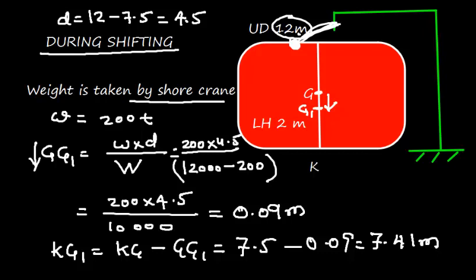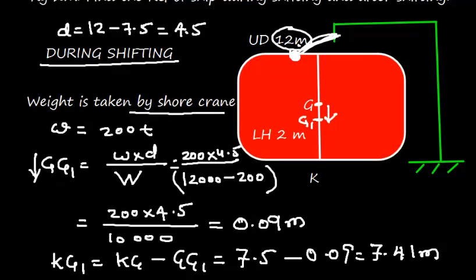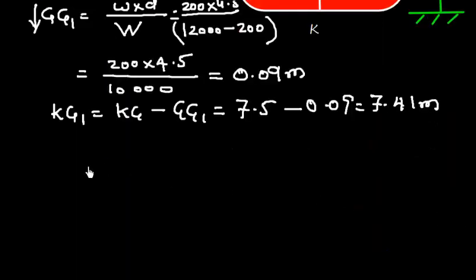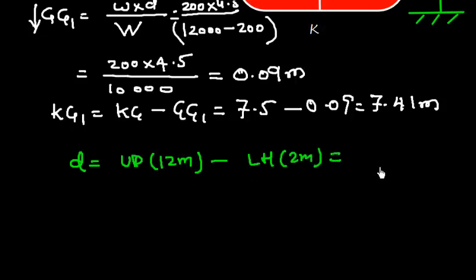Now let's see what happens when the shifting is over. When the shifting is over, the weight is shifted from this location to this location. So the total distance shifted will be D is equal to upper deck distance that is 12 meter and lower hold distance that is 2 meter. So total distance shifted is 10 meter and that is downward.